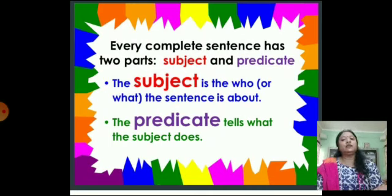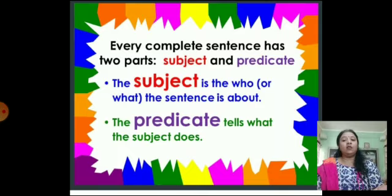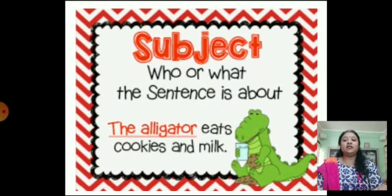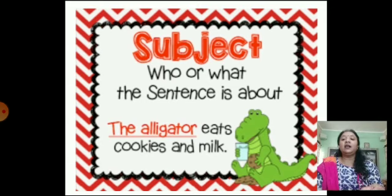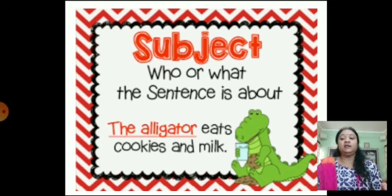The subject is who or what the sentence is about. The predicate tells us what the subject does. For example, in 'The alligator eats cookies and milk,' the alligator is the doer — the whole sentence is dependent on the alligator. So 'alligator' is the subject here.